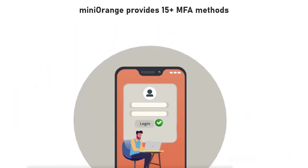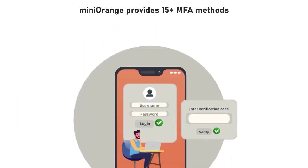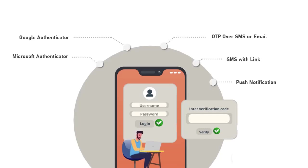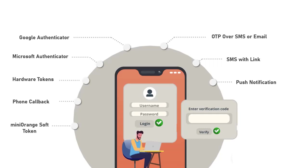miniOrange provides 15-plus MFA methods like OTP over SMS or email, SMS with link, push notifications, Google Authenticator, Microsoft Authenticator, hardware tokens, phone callback, miniOrange soft token, and many more.